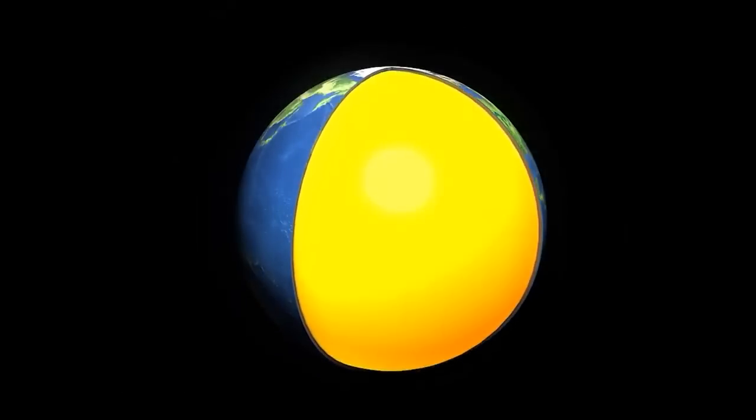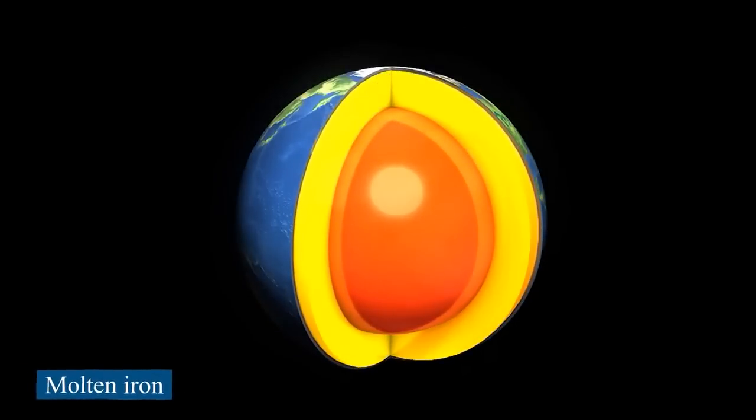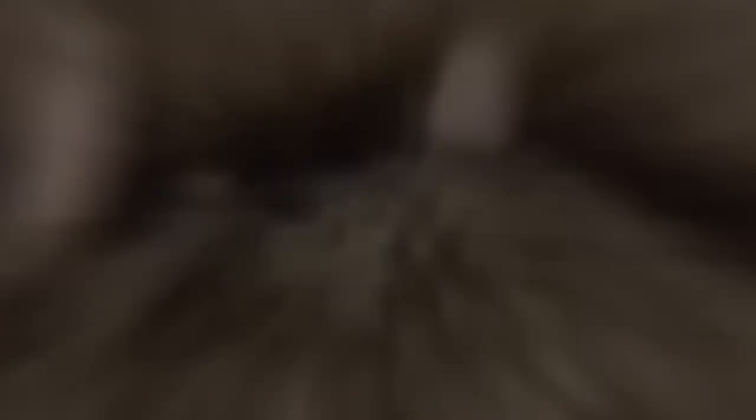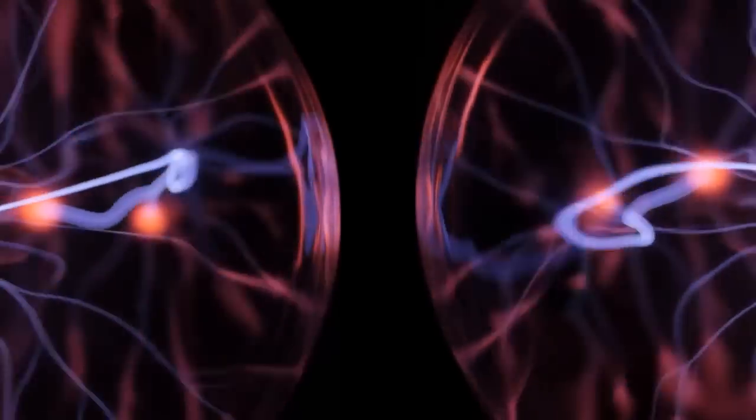The Earth's magnetic field comes from the flow of molten iron in the planet's core, which is about 1,800 miles below our feet. This very hot liquid makes electric currents, which leads to the formation of electromagnetic fields.